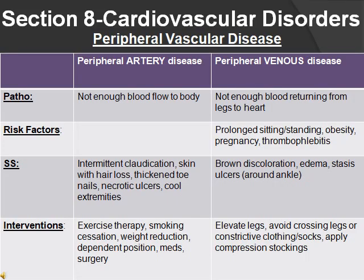Peripheral vascular disease includes peripheral artery disease and peripheral venous disease. Peripheral artery disease means not enough blood flow to the body; peripheral venous disease means not enough blood flow returning from the legs to the heart. Risk factors for peripheral venous disease include standing or sitting for a long time, obesity, pregnancy, and thrombophlebitis — anything that obstructs blood flow returning to the heart.